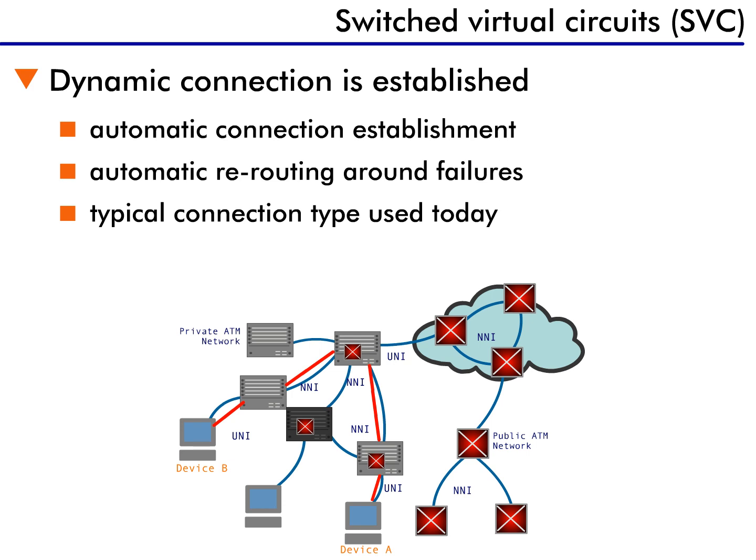If more communication is required, the connection is set up again. SVCs also have the ability to reroute a connection around a failure. Say a connection is established from device A to device B and the connection goes through three switches. If the middle switch fails, the connection is automatically rerouted around the failure. This happens automatically without any human intervention.